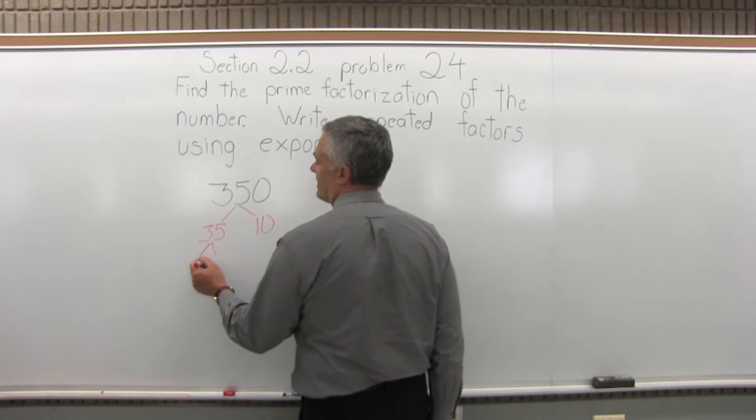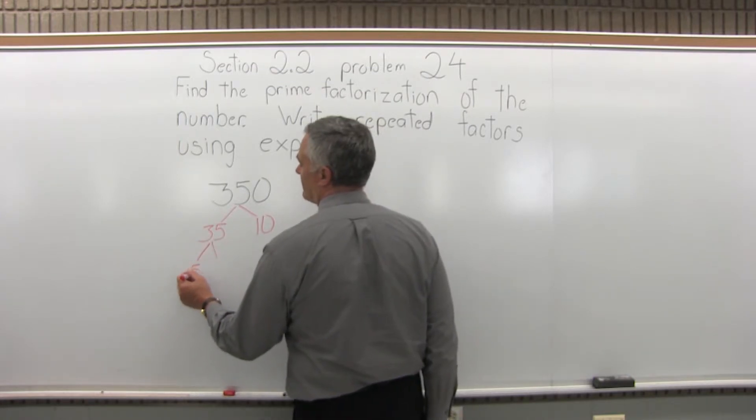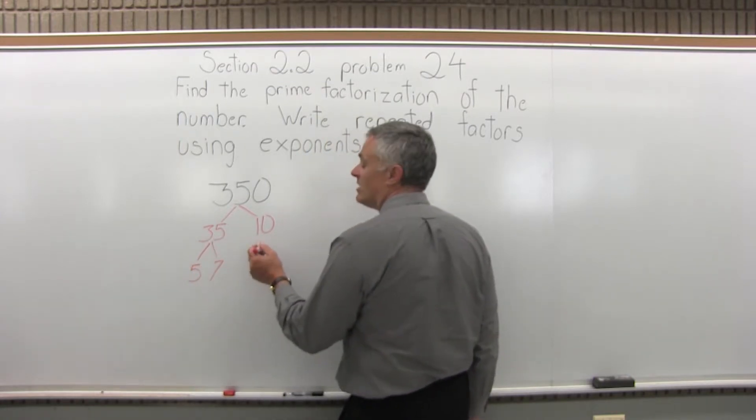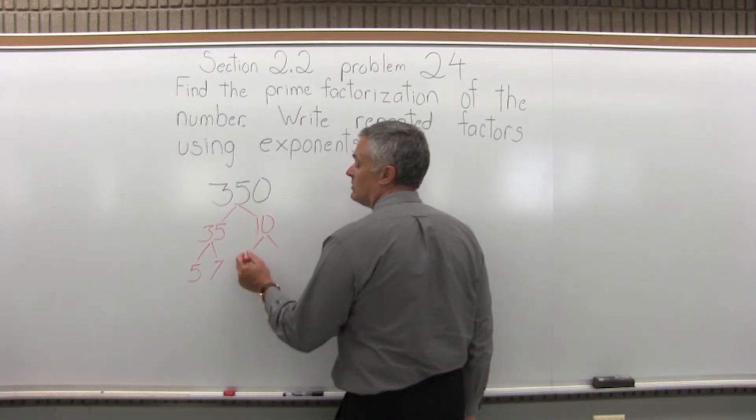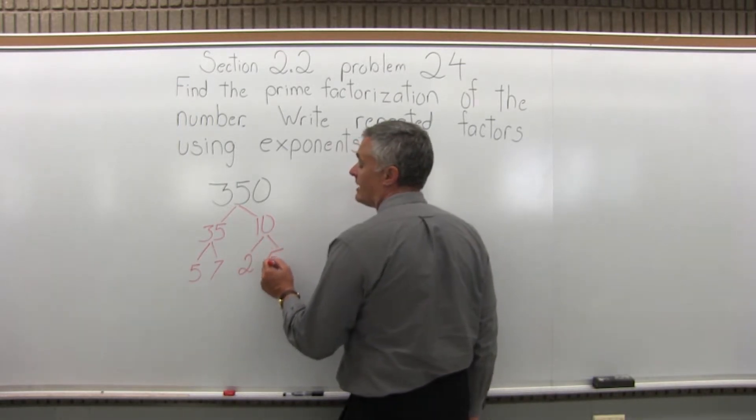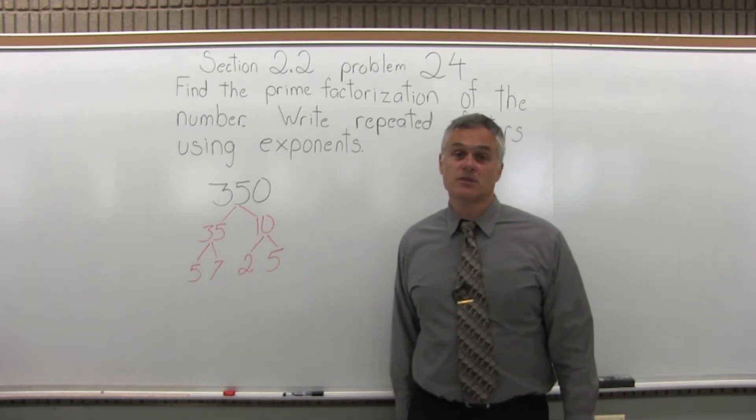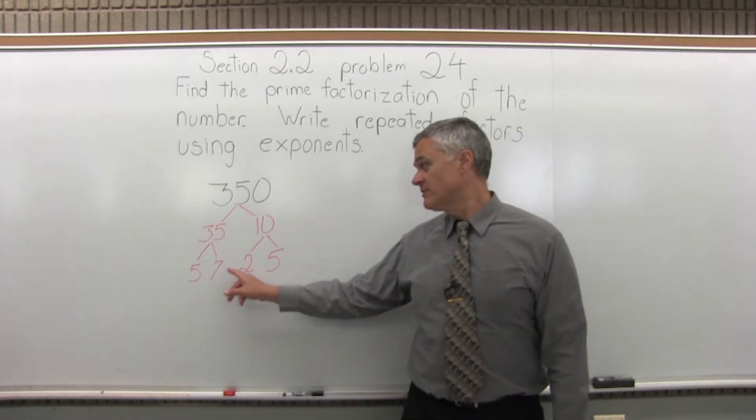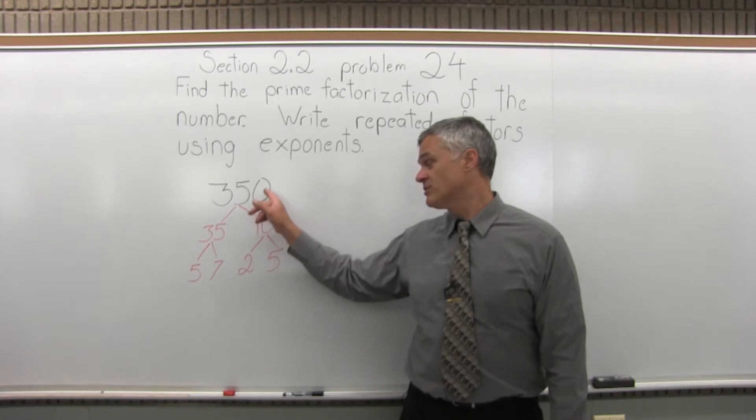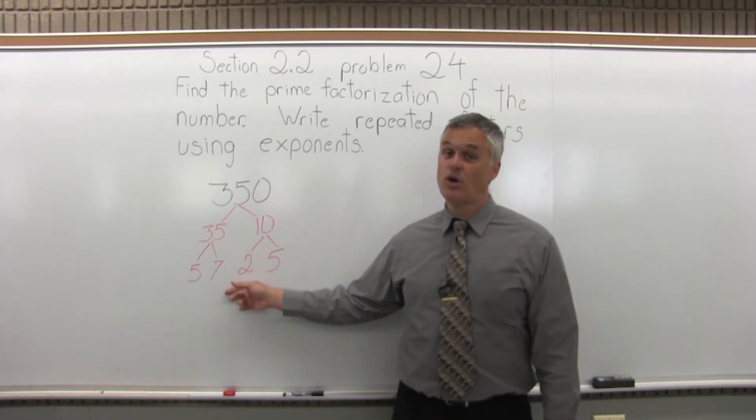The 35 we can make with 5 times 7, the 10 will also split into 2 times 5. Now at this point everything in that row is prime, so this is as far as I can go. 5 times 7 times 2 times 5 multiplies to make 350. They're all prime numbers.